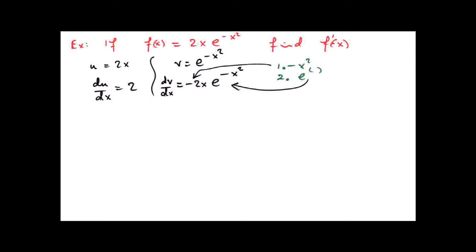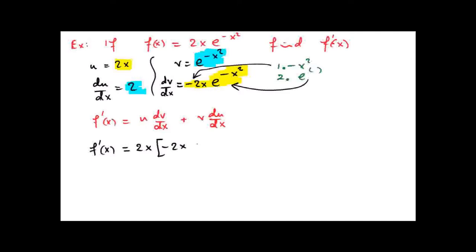Now it's the product rule. The product rule: f dash x equals u·dv dx plus v·du dx. So f dash x equals u·dv dx, that's 2x multiplied by minus 2x multiplied by e to the power of minus x squared, plus v·du dx, so that's plus 2e to the power of minus x squared. Tidying up, that's 2e to the power of minus x squared minus 4x squared·e to the power of minus x squared.